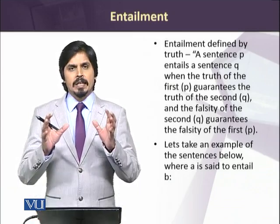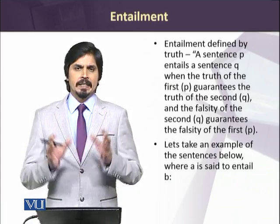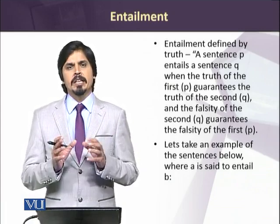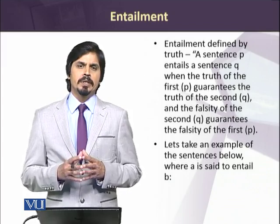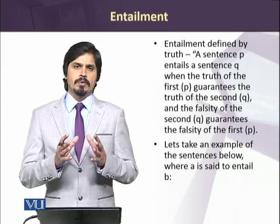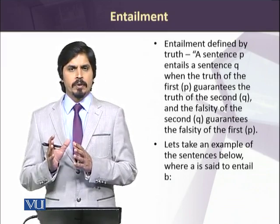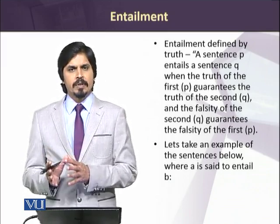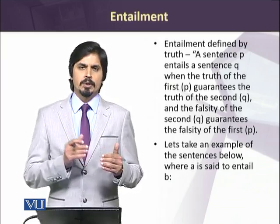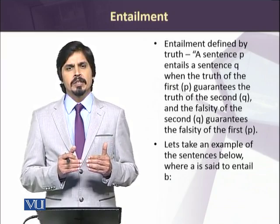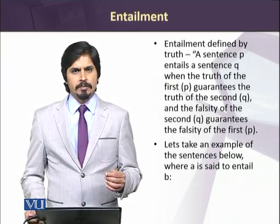Putting it in simpler words, two sentences can be considered to have a relationship of entailment when the truth of one guarantees the truth of the other, and the falsity of the other guarantees the falsity of the first one. So they are in a kind of relationship of essential connection of meanings.